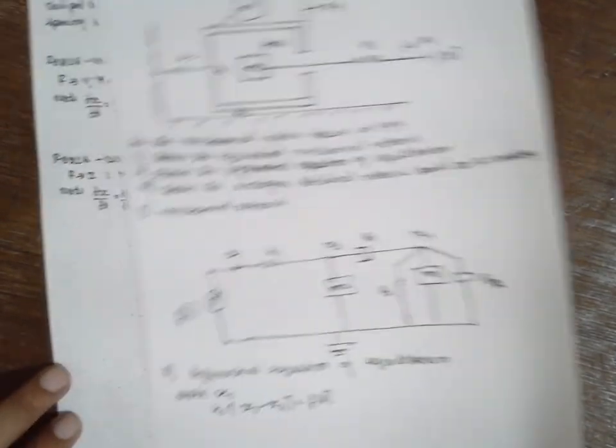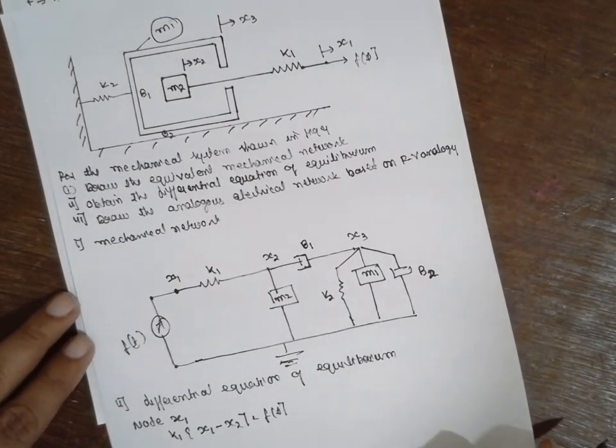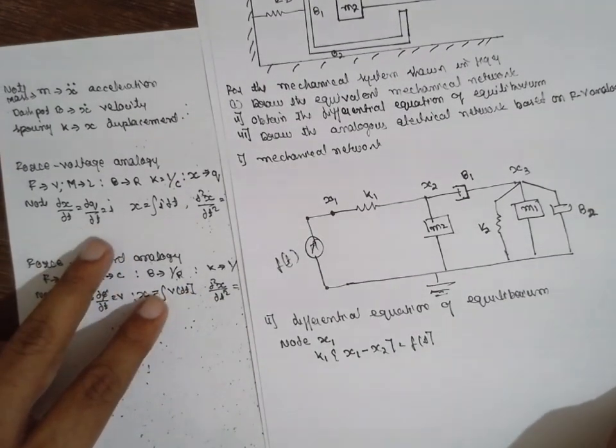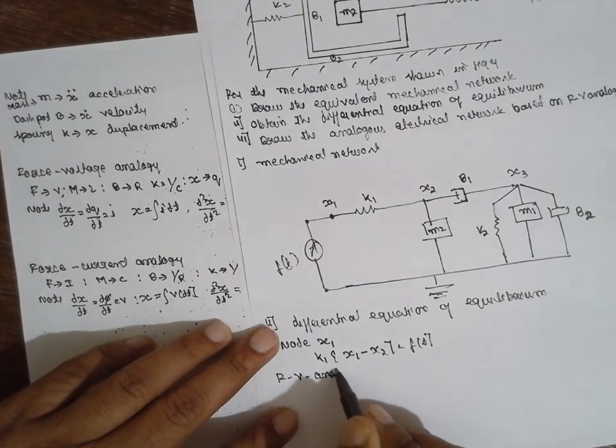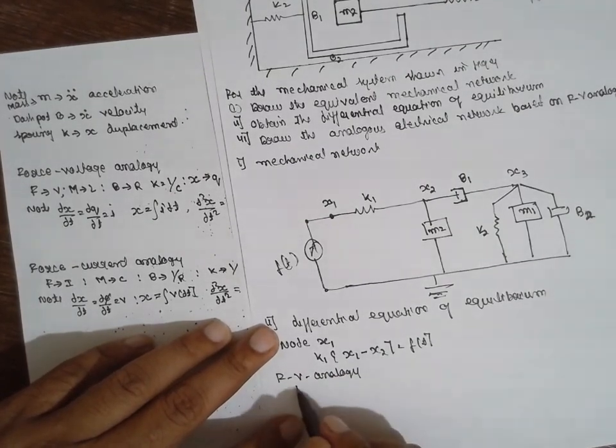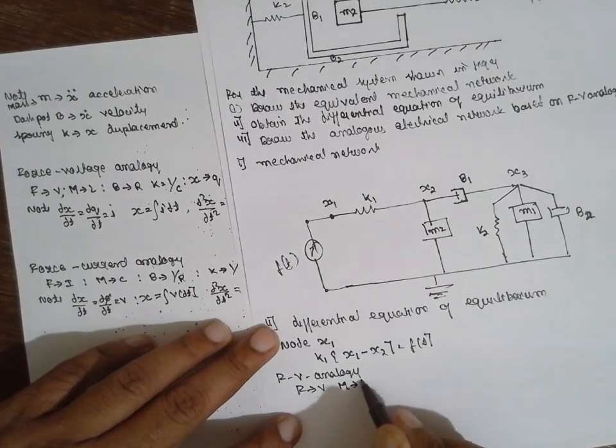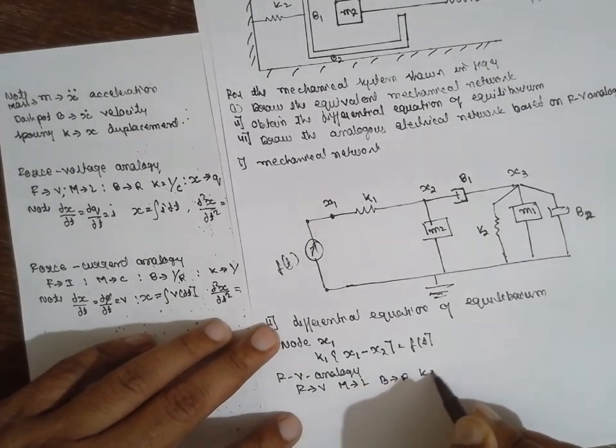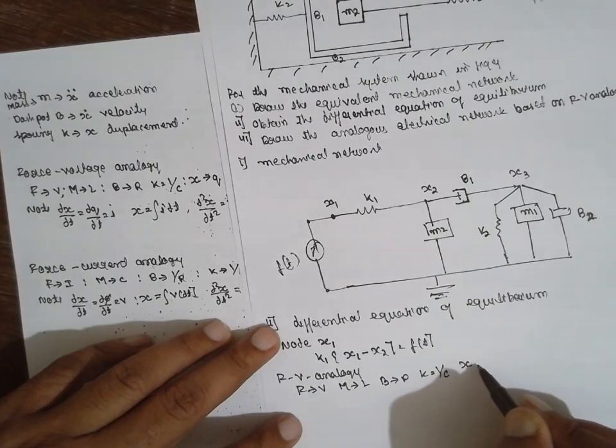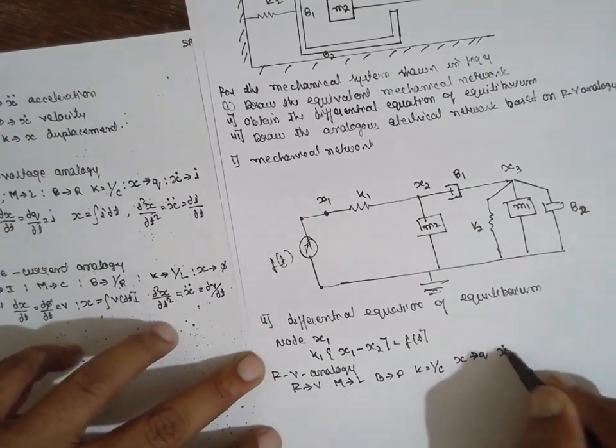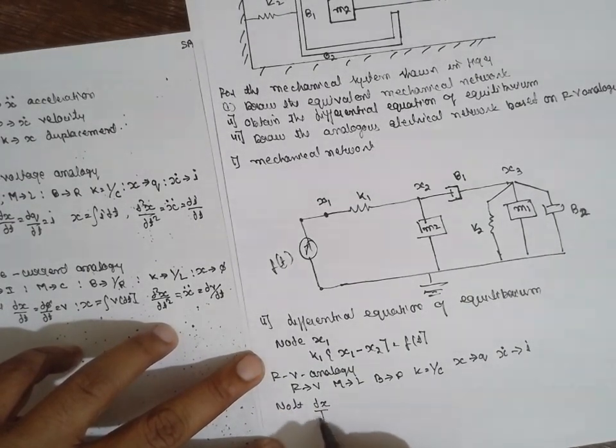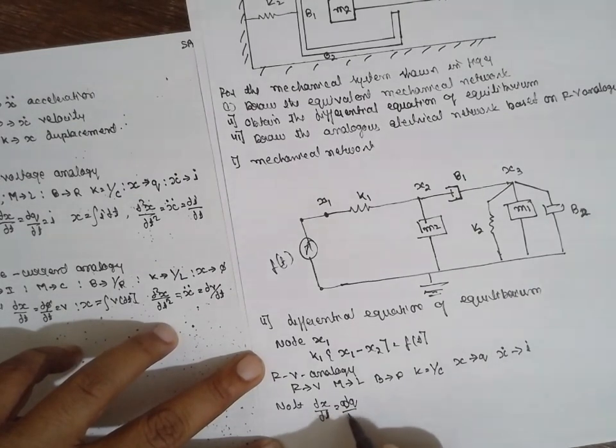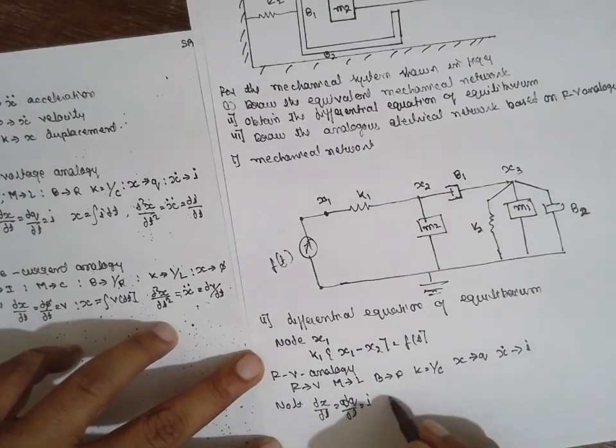Now replace everything with force analogy. This is the force-voltage analogy. Replace F by voltage, M by L, B by R, K equals 1 by C. X equals Q, x dot equals I. Dx by dt equals dq by dt equals I.